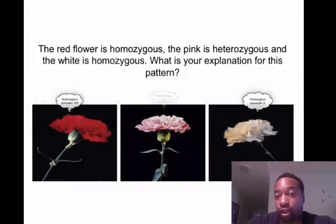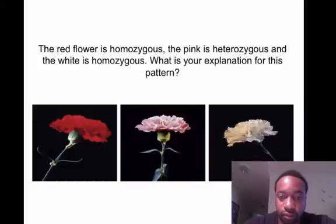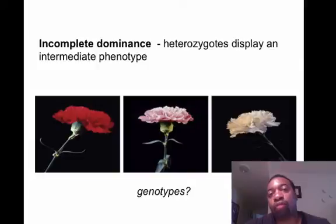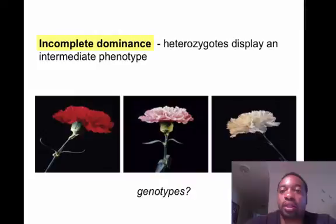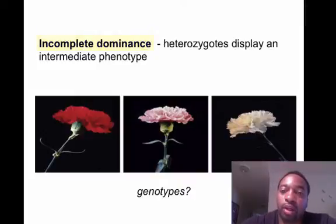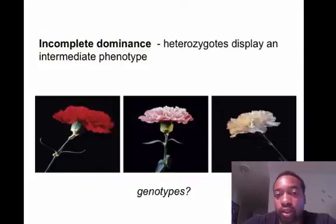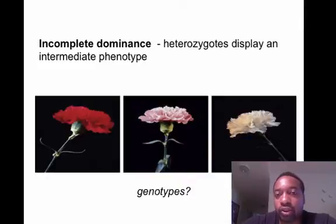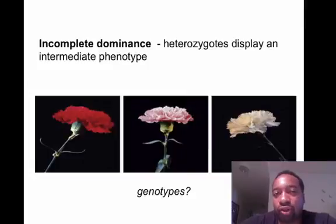What's the explanation for this observation? This brings us to a concept called incomplete dominance. The definition is that heterozygotes display an intermediate phenotype — intermediate between red and white, which is pink. Another way to think about it is the heterozygotes display a blending of the traits, like if you were to mix red and white, you get pink.